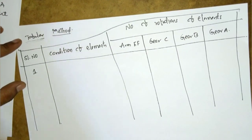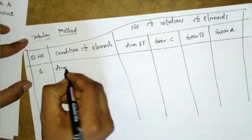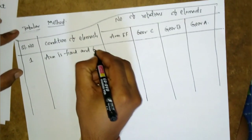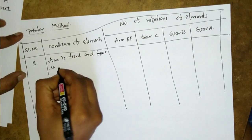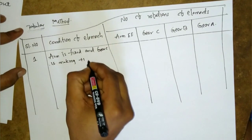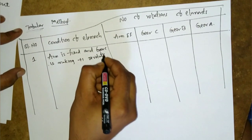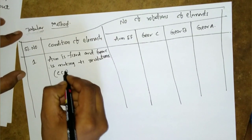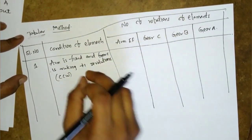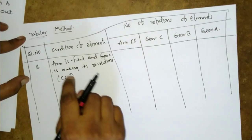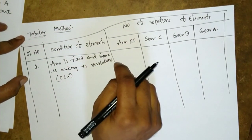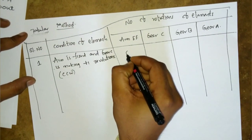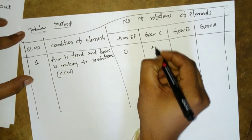Step 1 condition: assume the arm is fixed and gear C makes plus one revolution. We take counterclockwise as positive, so gear C makes +1 revolution in the counterclockwise direction. Since the arm is fixed, it makes zero revolutions.